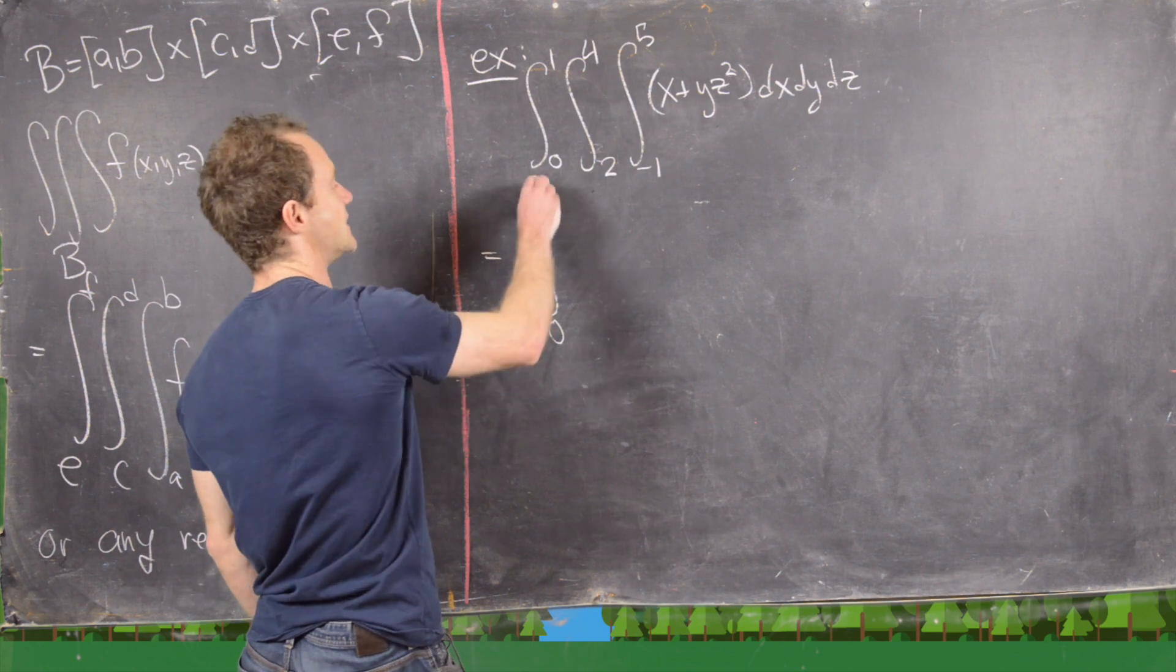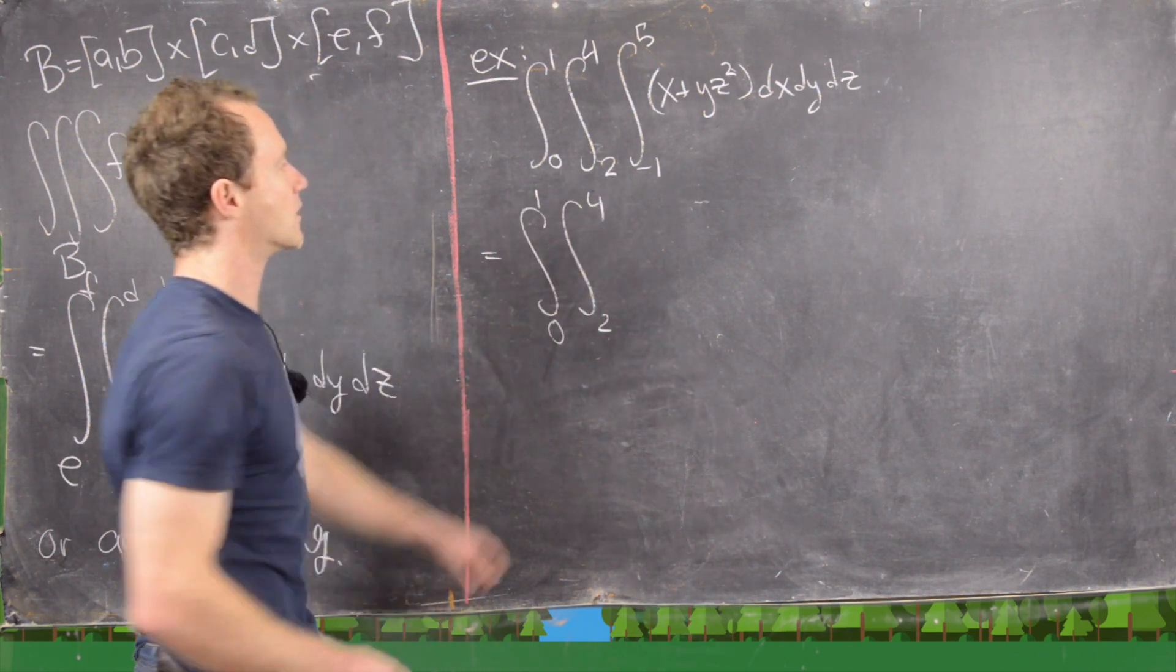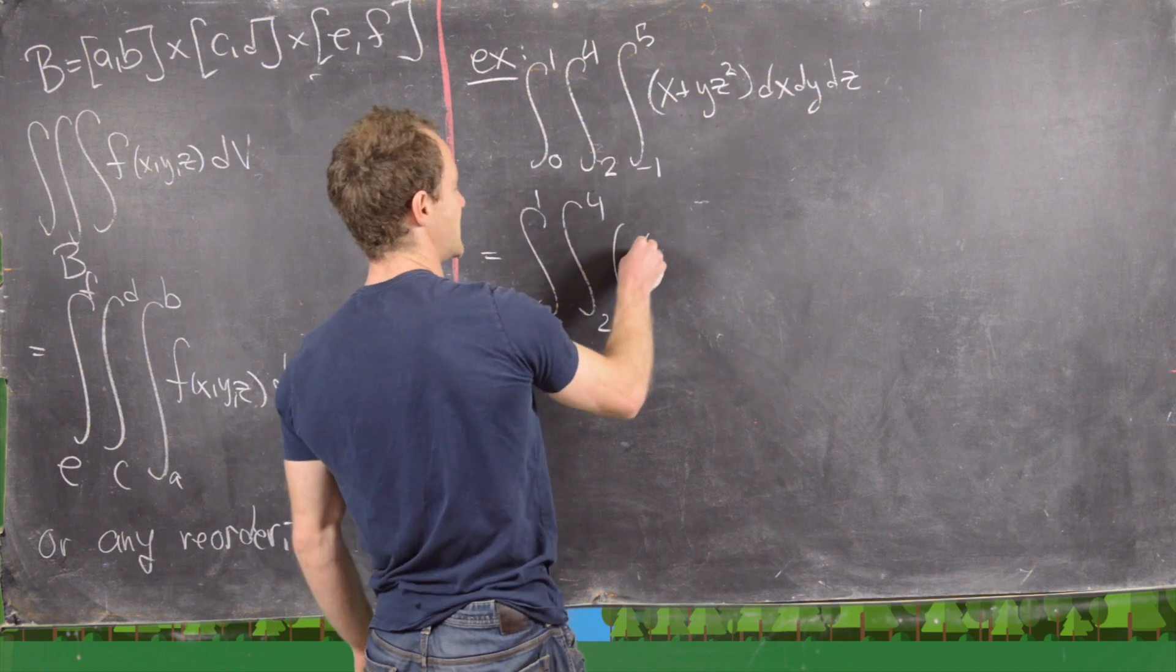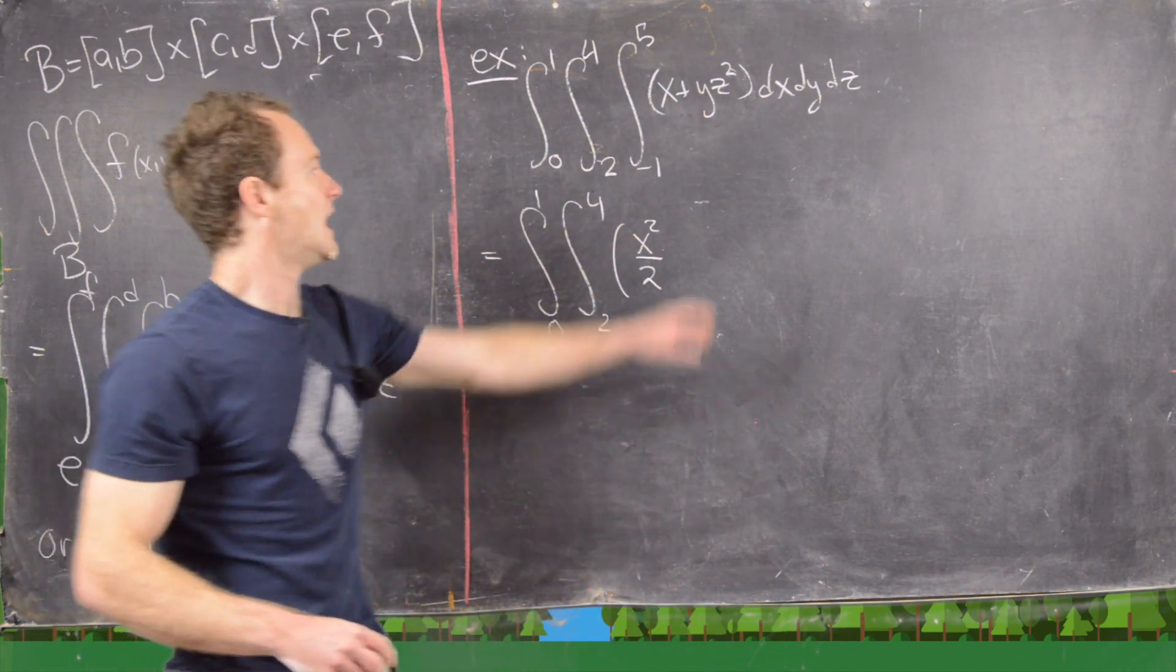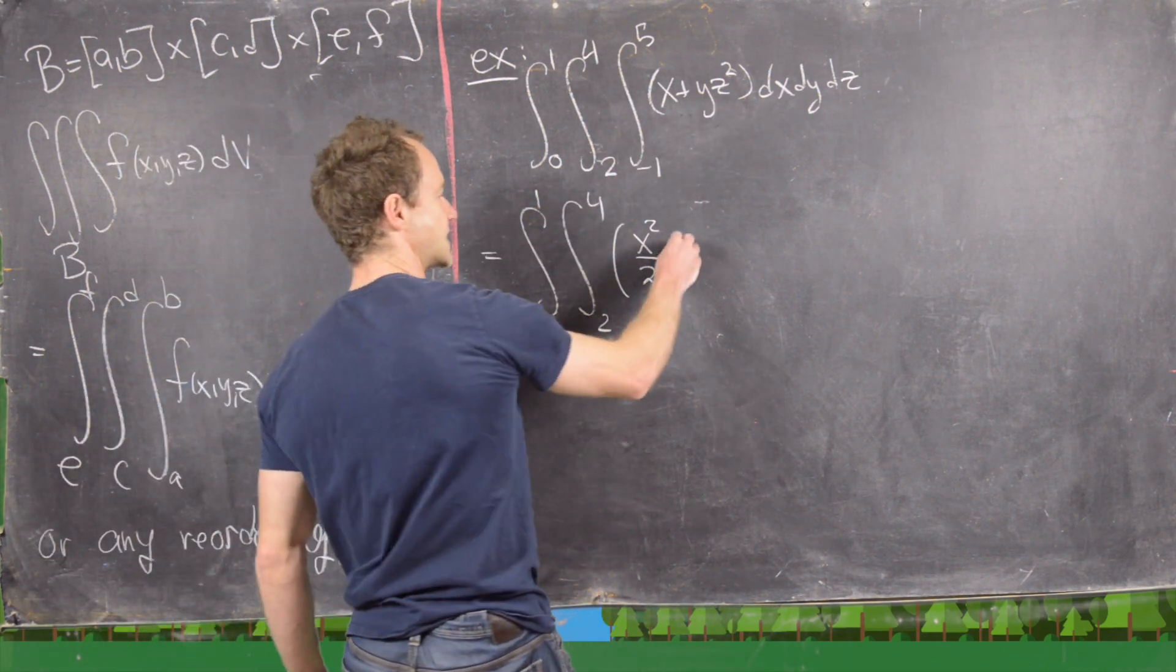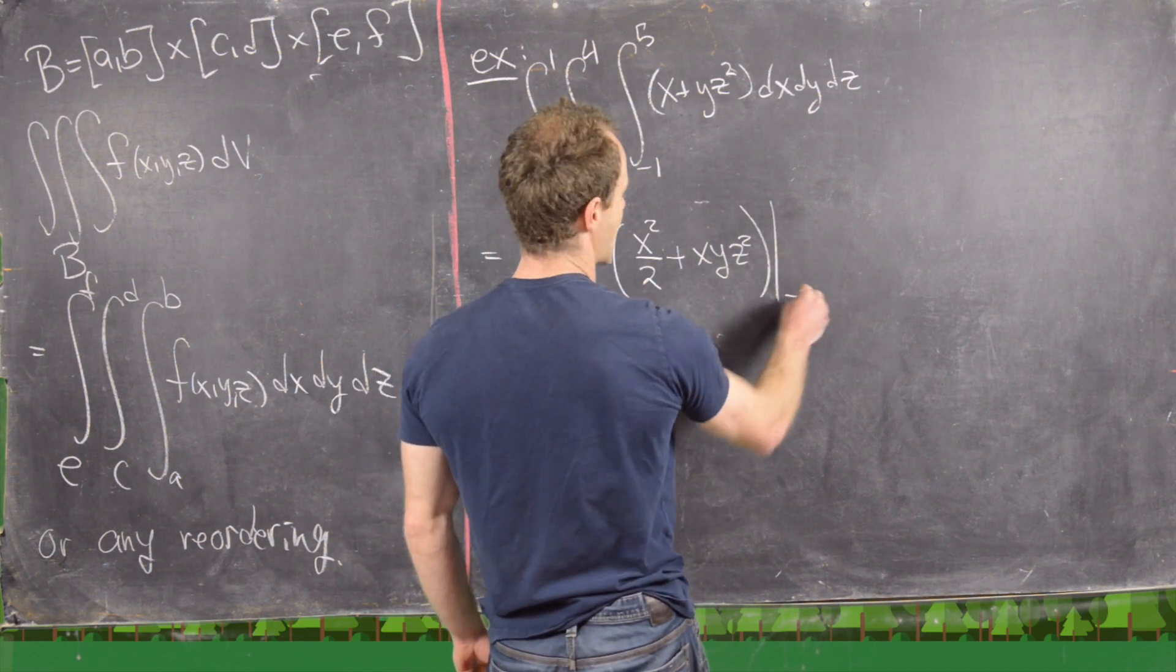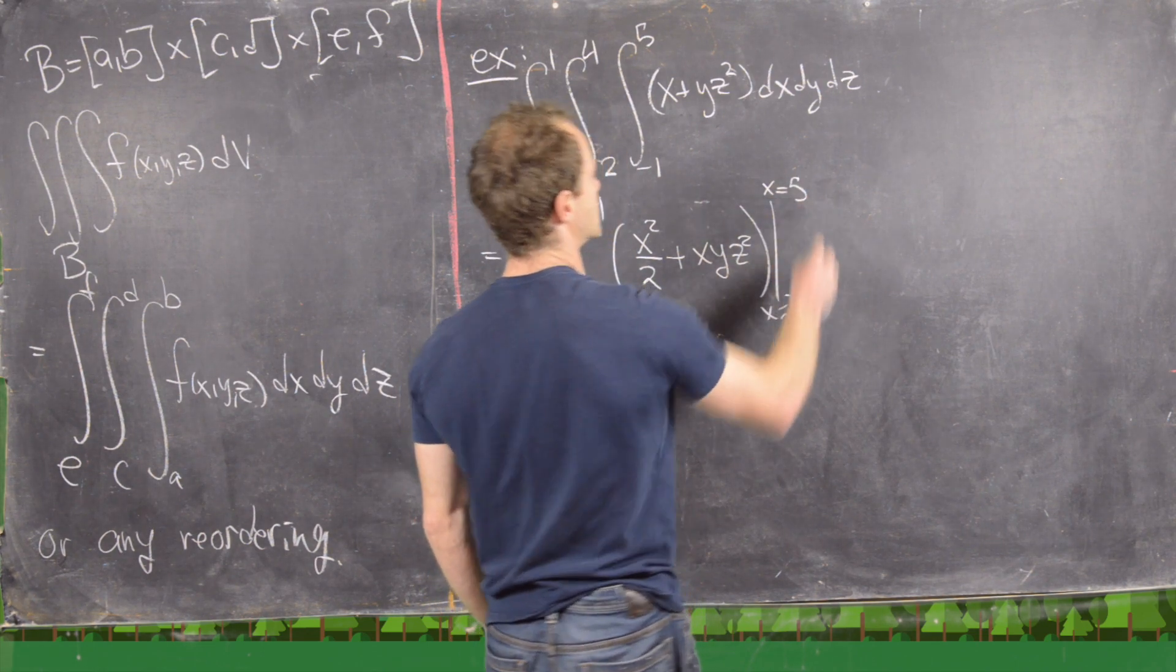So we'll just bring down this double integral. So the integral 0 to 1, 2 to 4. Now we need to take the antiderivative of this thing with respect to x. So let's see. With respect to x, x is going to become x squared over 2. And now y, z squared is a constant with respect to x, so that's going to become x, y, z squared. Now we're going to evaluate that from x equals negative 1 up to x equals 5.